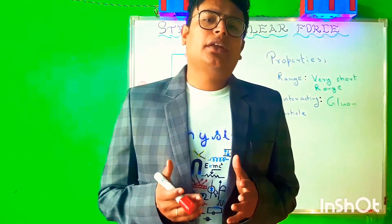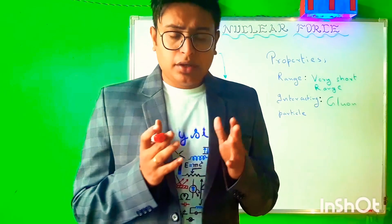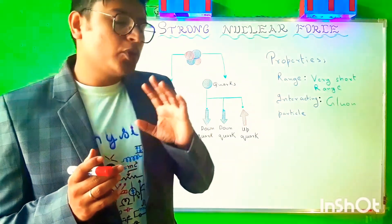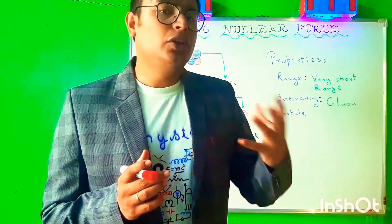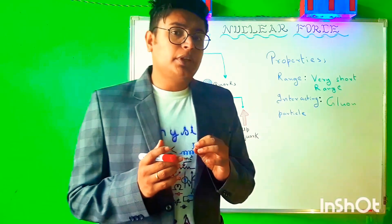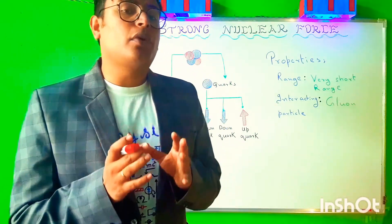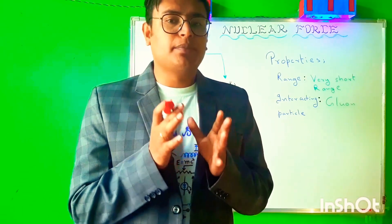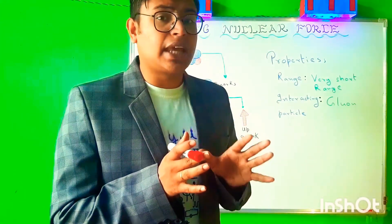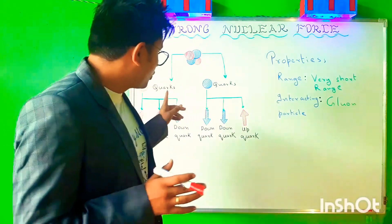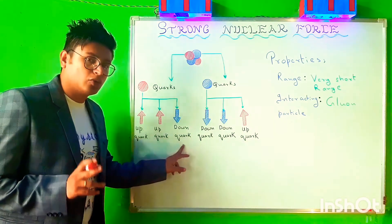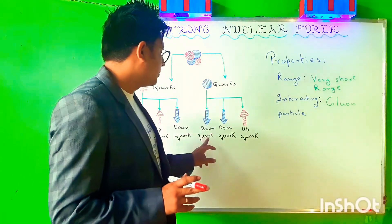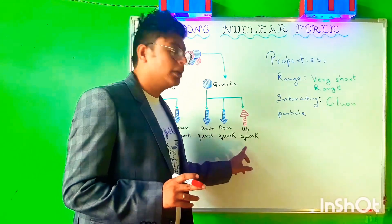As we discussed, a nucleus is made up of protons and neutrons. One more question is: can we further break a proton or a neutron? It is very much possible. It has been found that a proton is made up of quarks, and a neutron is also made up of quarks — quarks are elementary particles and there are six types. A proton is made up of two up quarks and one down quark; a neutron is made up of two down quarks and one up quark.